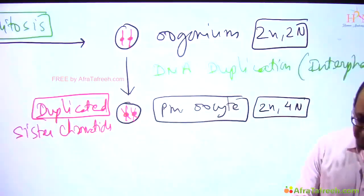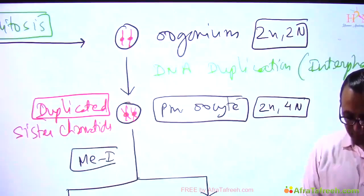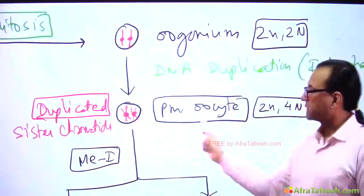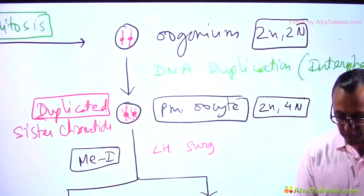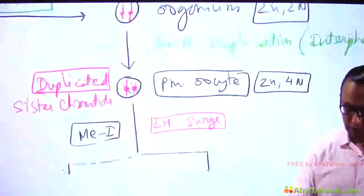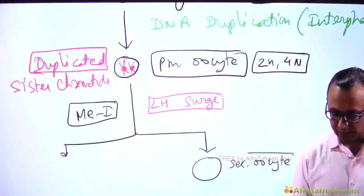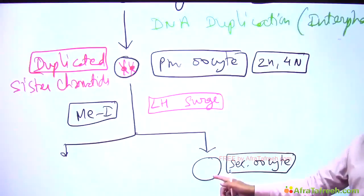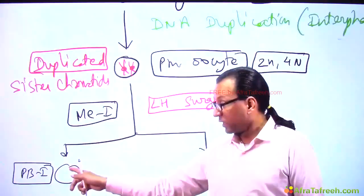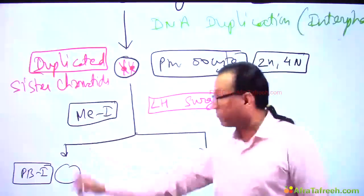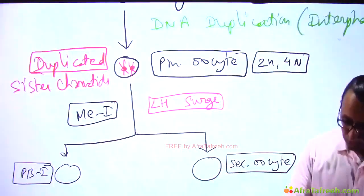This primary oocyte as it moves further is going to enter meiosis I. It requires something called an LH surge — the primary oocyte must be exposed to LH surge. After LH surge it will become the secondary oocyte. Along with the secondary oocyte you will also get the first polar body. In meiosis I, maternal and paternal chromosomes are going to separate, so the next cells are haploid.